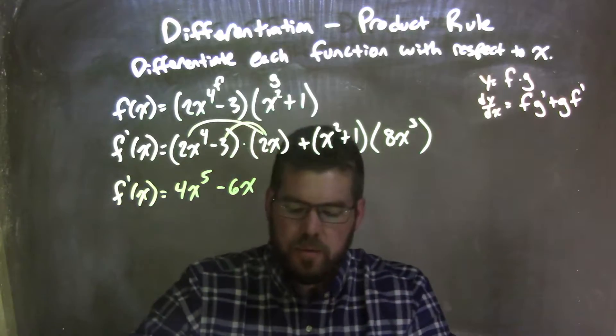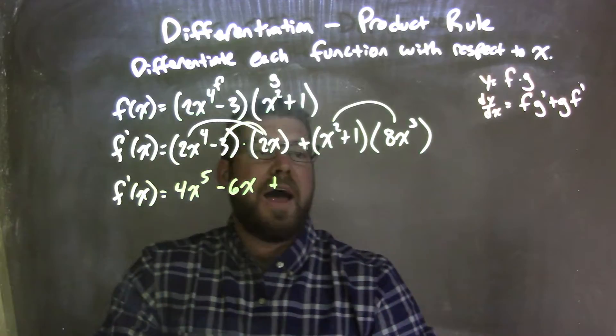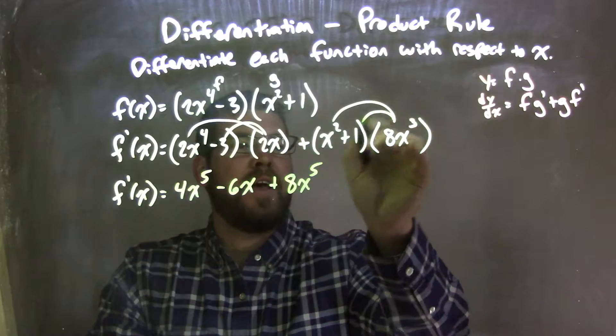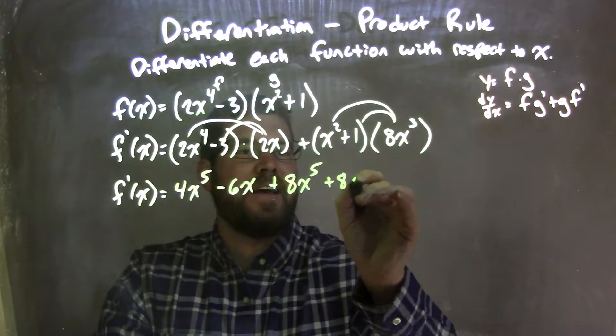Again, now we do the same thing with the 8, the 8x to the 3rd. 8x to the 3rd times x squared is 8x to the 5th, and then 8x to the 3rd times positive 1 is plus 8x to the 3rd.